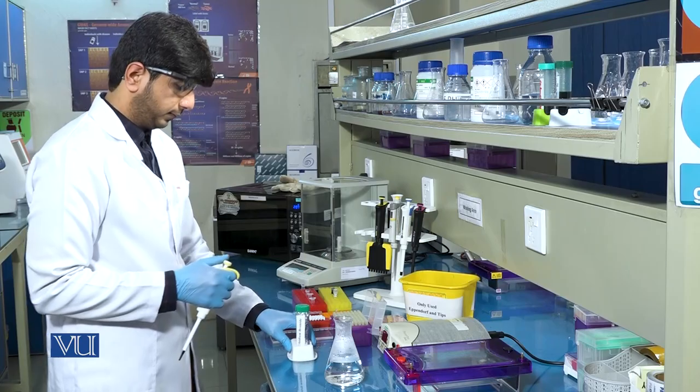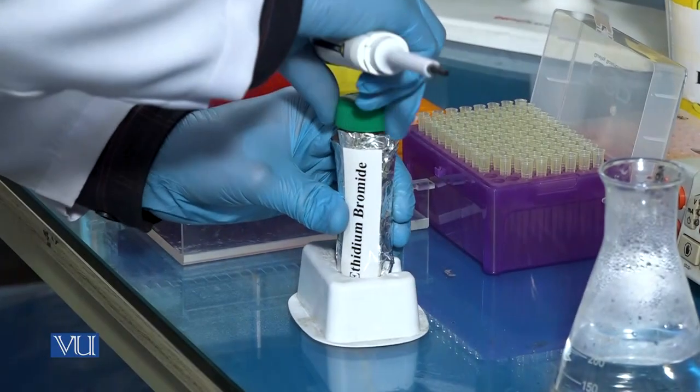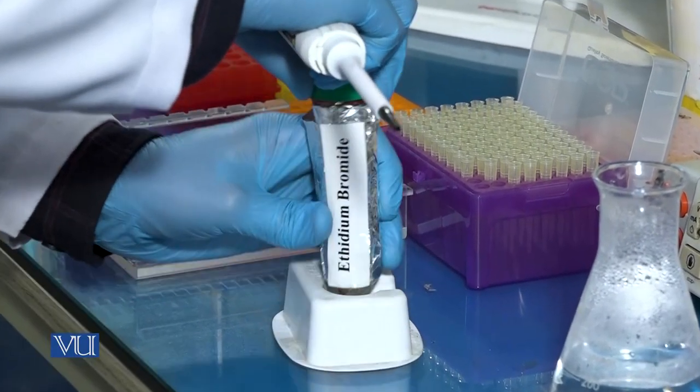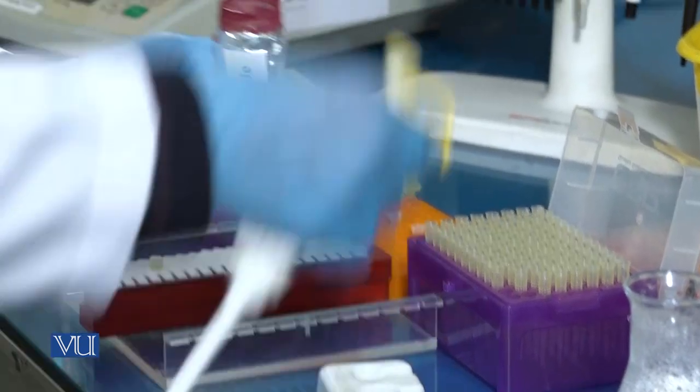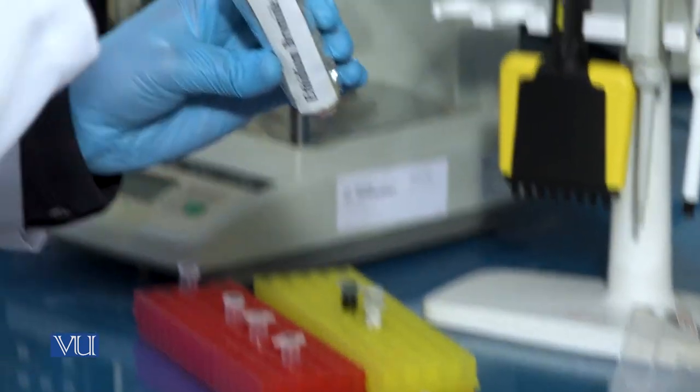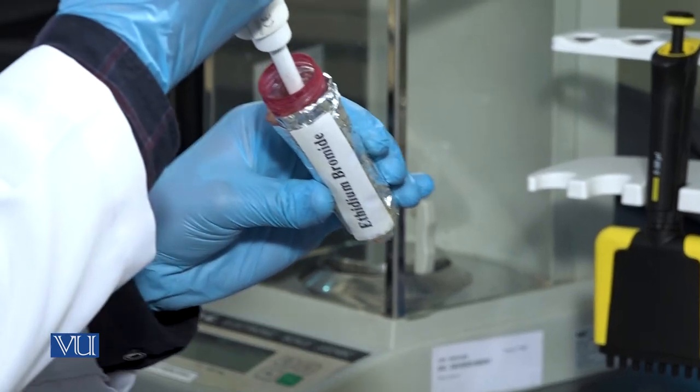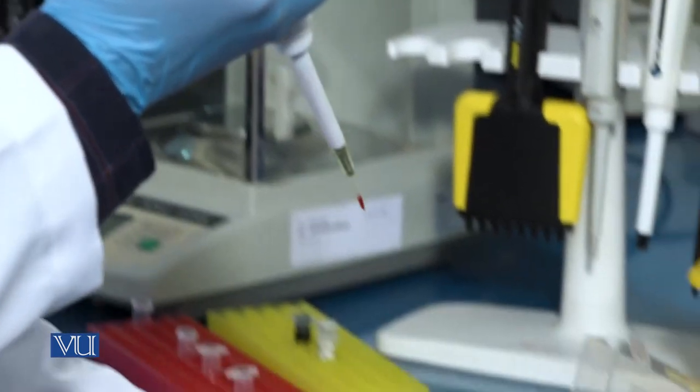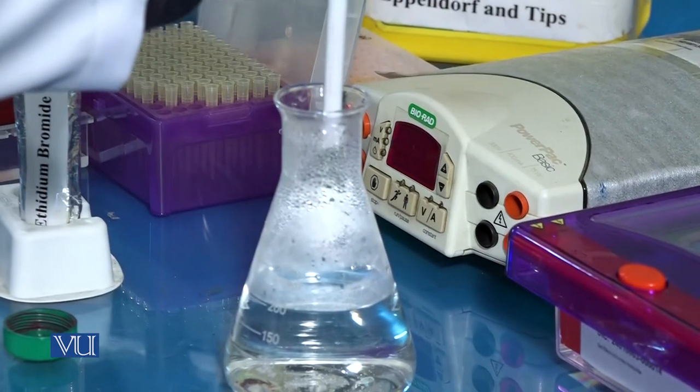Add 7 to 8 microliter ethidium bromide into the gel flask. It must be noted that ethidium bromide should be handled carefully because it is carcinogenic dye.